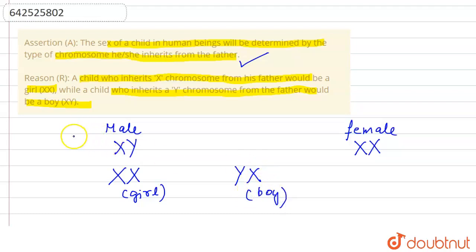So only the chromosomes from the male, or we could say the father parent, is necessary for the determination of the sex. Now reason says that a child who inherits X chromosome from his father would be a girl, and the child who inherit Y chromosome from the father would be a boy. This is also right.